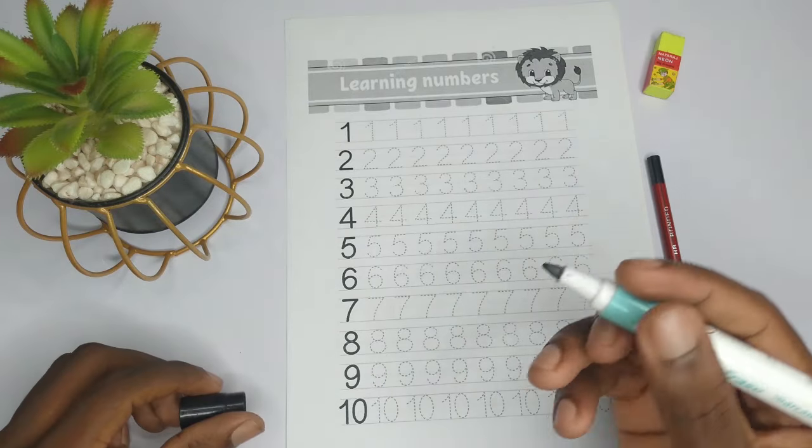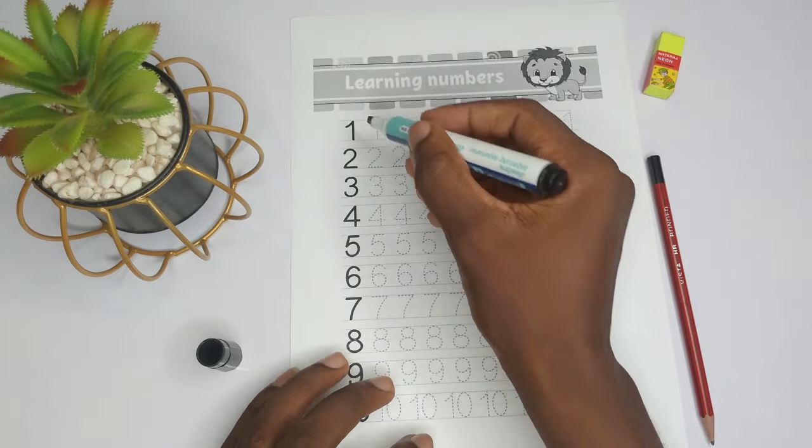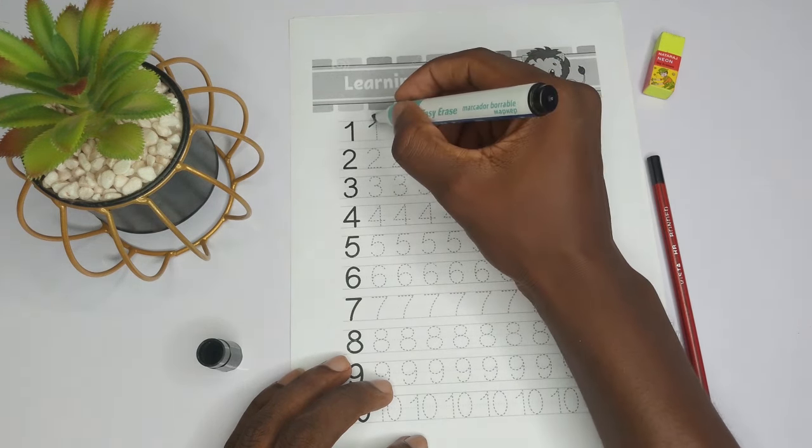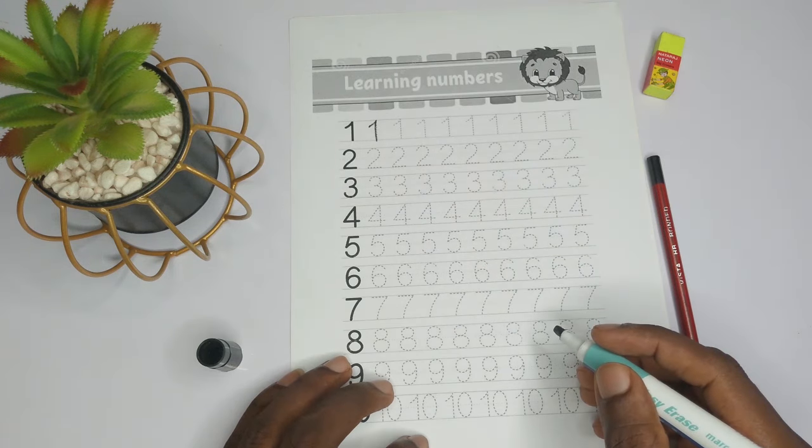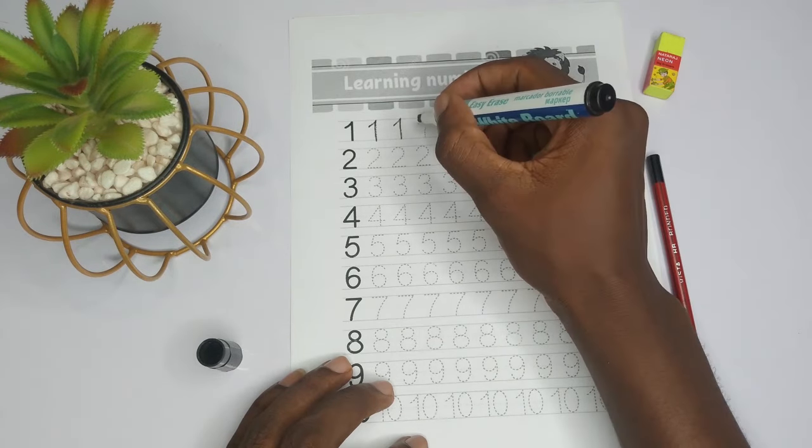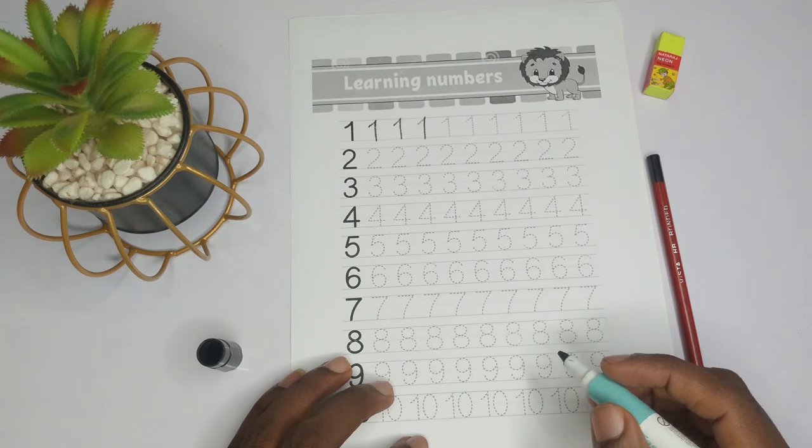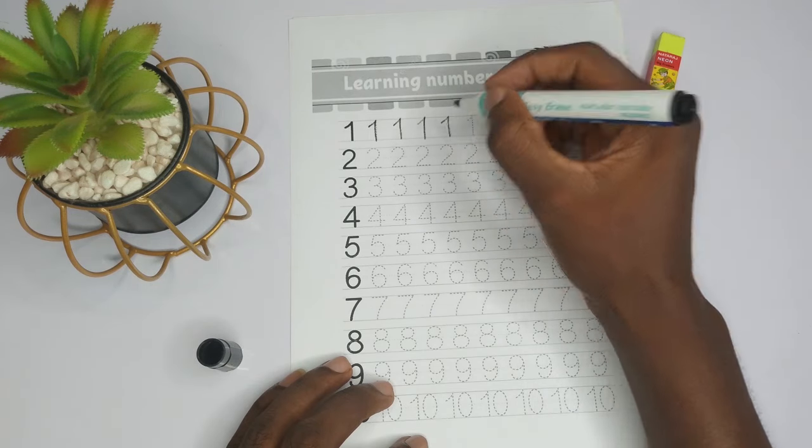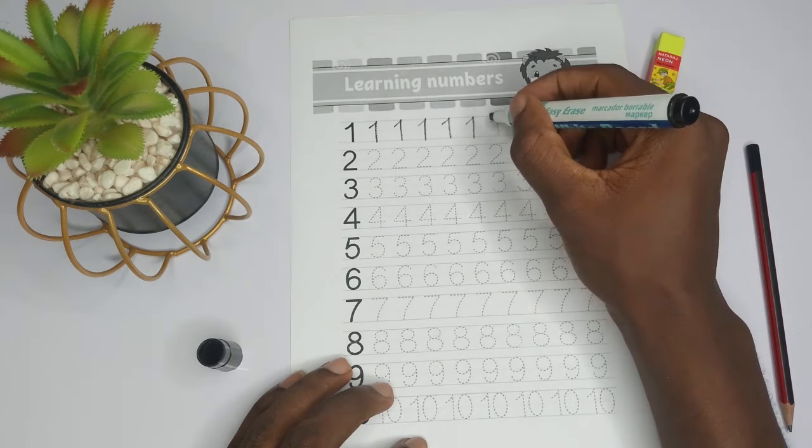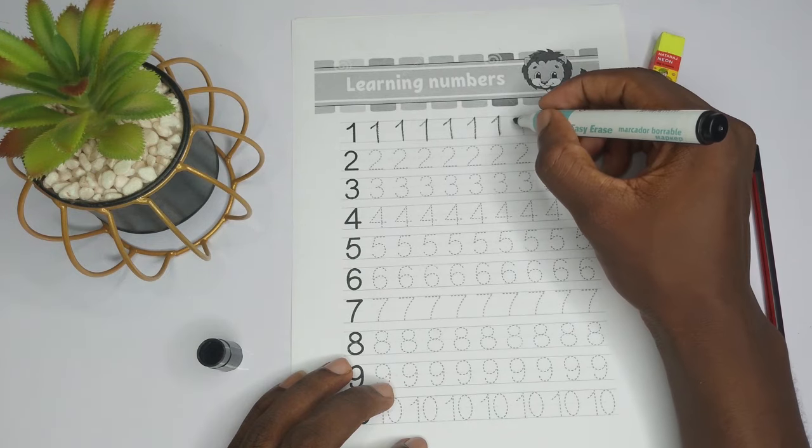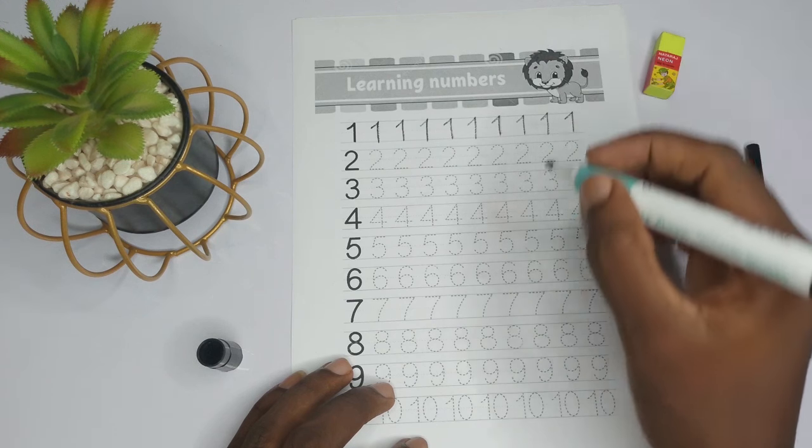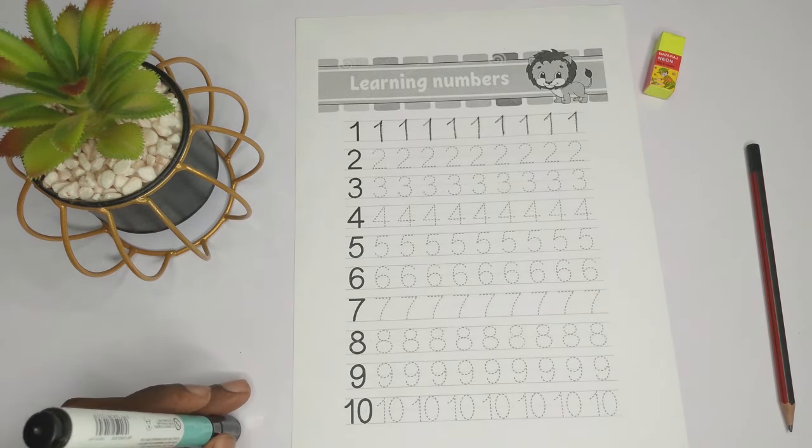So let's start with one. To write one, we follow the dots, so we start from the beginning over here, a little bit all the way to the top, and then we move it down like this. So, one. Then we repeat that again: up, down, one. Do it again: up, down, one. Up, down, one. Let's continue practicing.